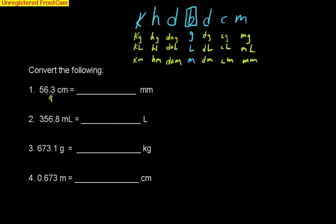So if we start here, I'll just write it over here, if we have 56.3, there's our decimal place, we have to move this one space to the right, from centi to milli. And our new number, then, would be 563 millimeters. Let's try the next one.